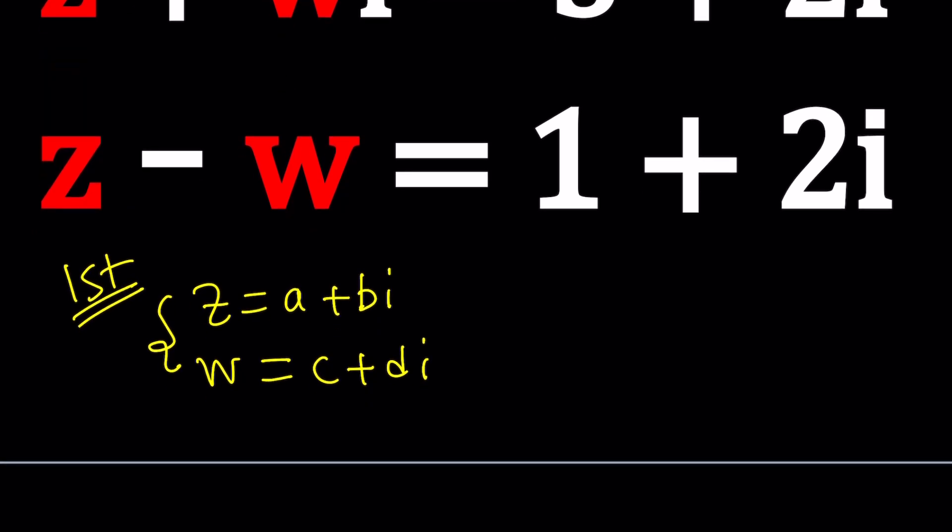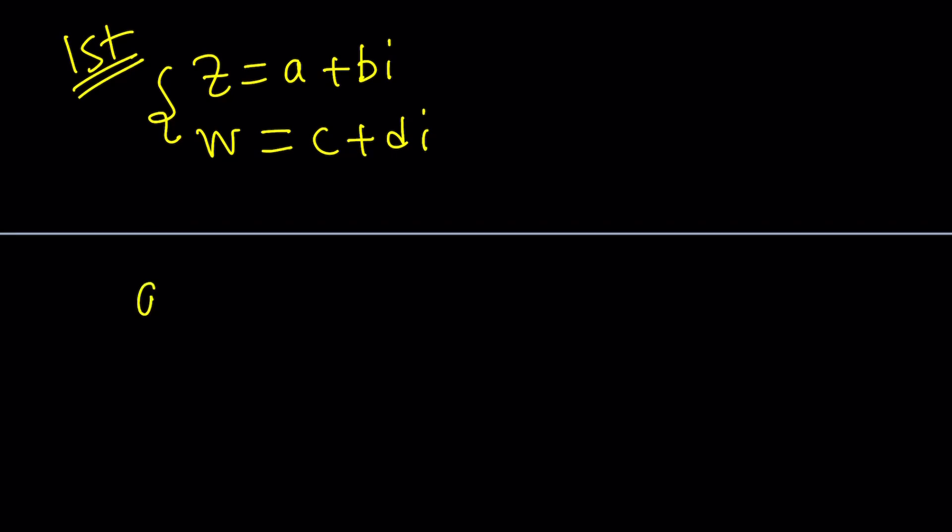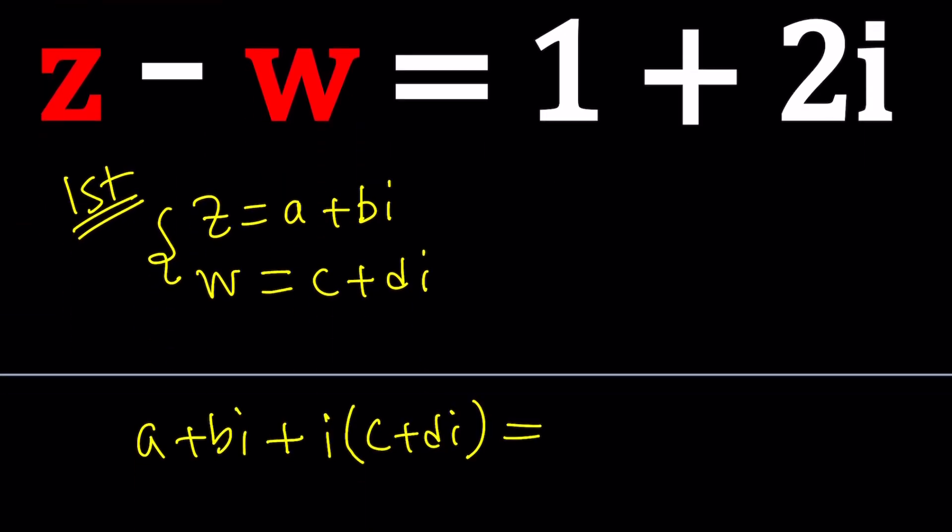Let's go ahead and plug this in. We're going to get a plus bi plus W times i which is i times c plus di. And this is going to give us 3 plus 2i.